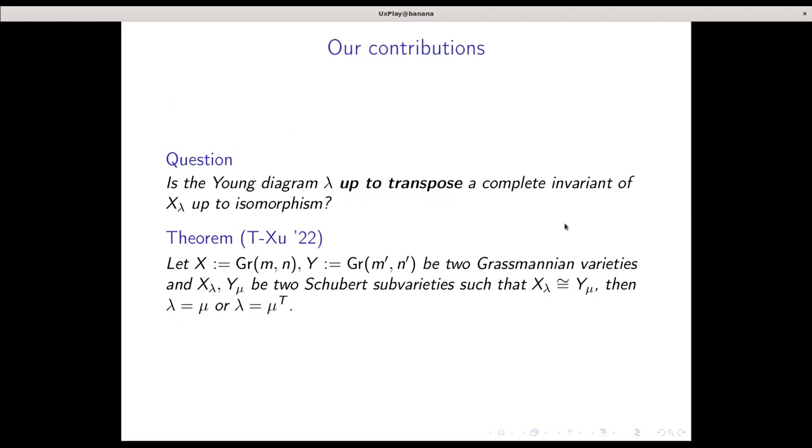Most of our proof relies on the fact that we want to look at properties of X_lambda which are intrinsically geometric, so they don't change up to isomorphism. Then we try to fish out combinatorial data out of it. This theorem is by myself and Xu in 2022.